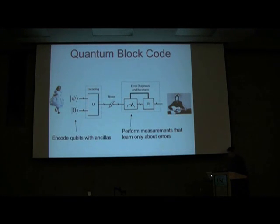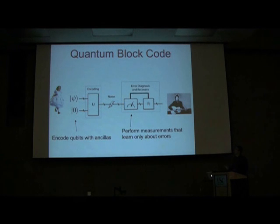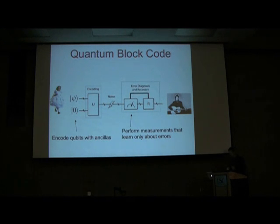To review: a quantum stabilizer code, or quantum block code, operates in the following way. The perspective we're taking in this talk is a communications perspective, not necessarily quantum computing, though quantum convolutional codes can be used for quantum computing. Alice starts out with some information qubits and some redundant qubits. She performs an encoding, sends these qubits one at a time over a noisy channel. Bob then performs measurements to diagnose the errors, learns syndromes from the results of those measurements, and performs recovery operations. This is the standard model of quantum error correction.